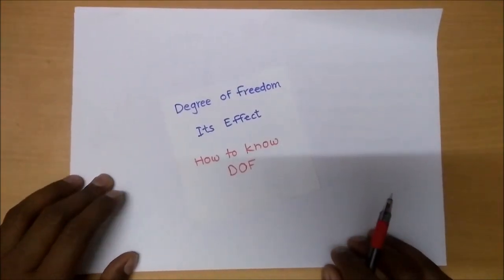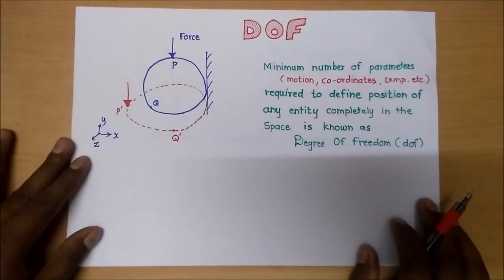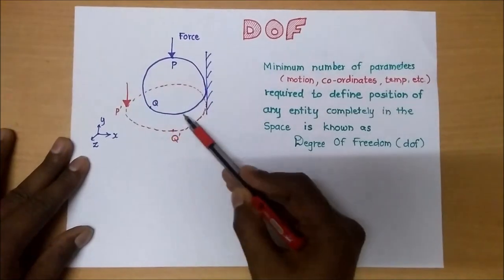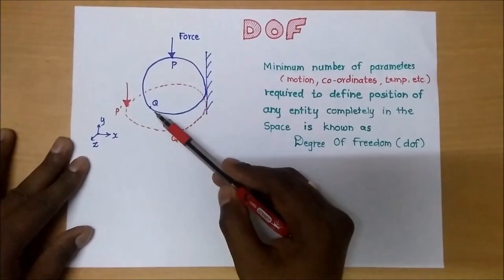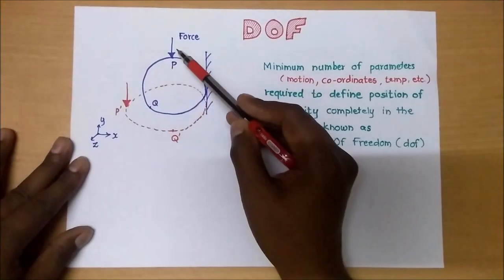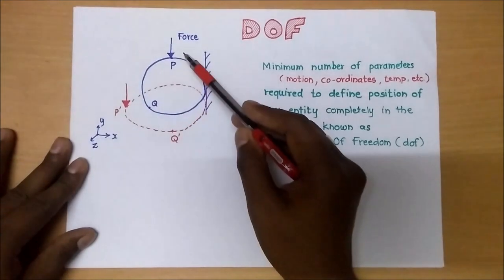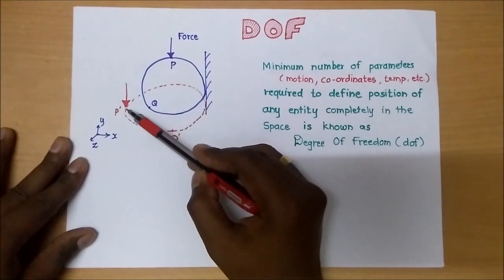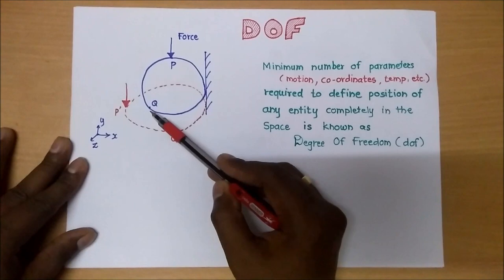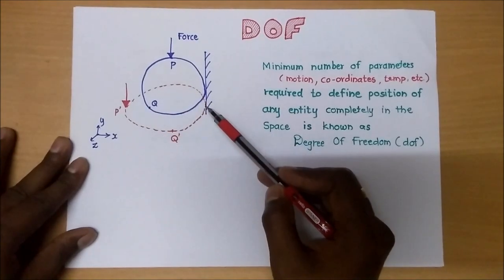Hello friends, today we will see what is meant by degrees of freedom, its effect, and how to find degrees of freedom. Here we will take one small example. Suppose this is one geometry which is attached to a fixed support. At this point there is one point P on which a force is acting, and there is one more point Q. When there is application of this force, this body will try to move to another position. This red color indicates the position after the action of this force. Point P moves from P to P-dash and point Q moves from Q to Q-dash in this space.